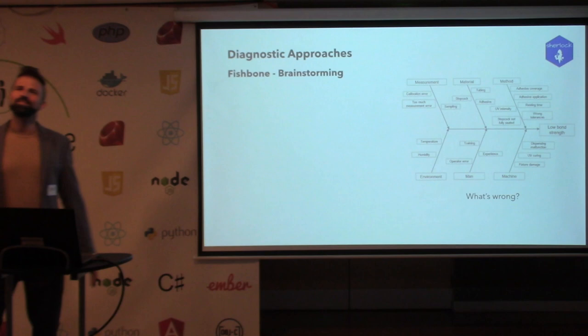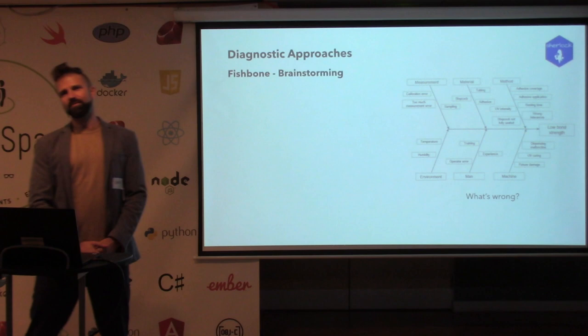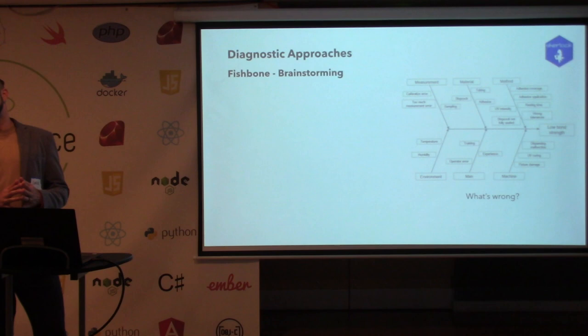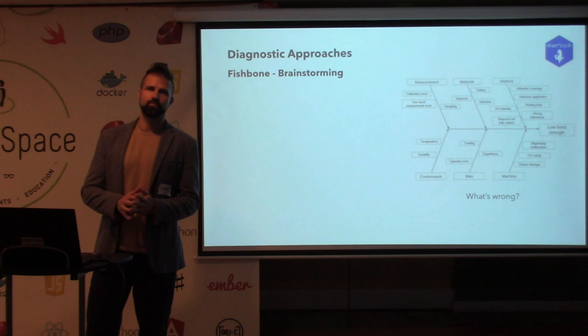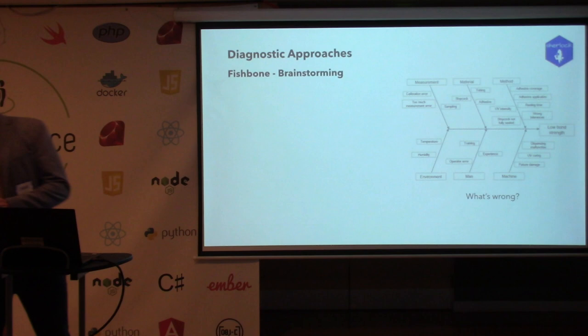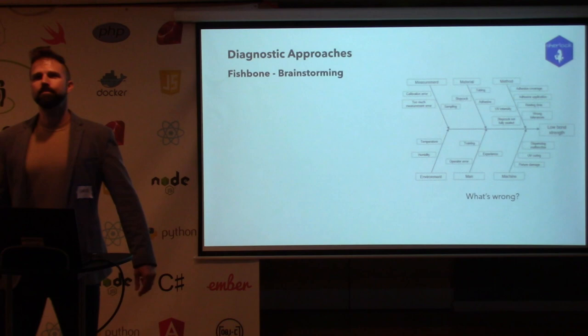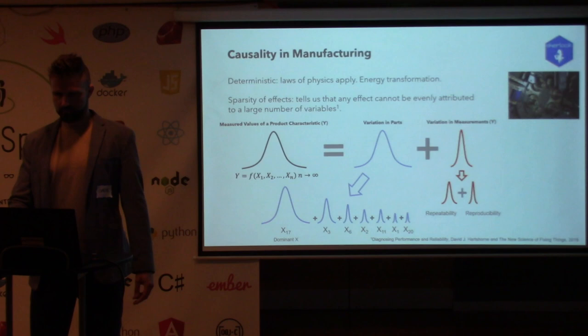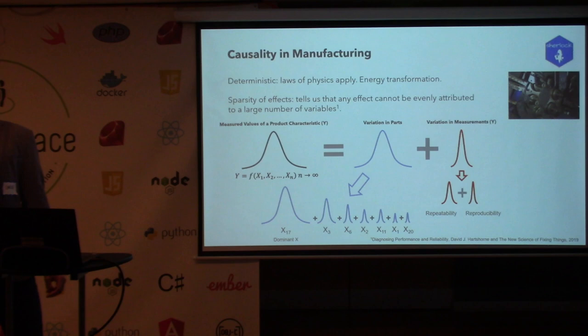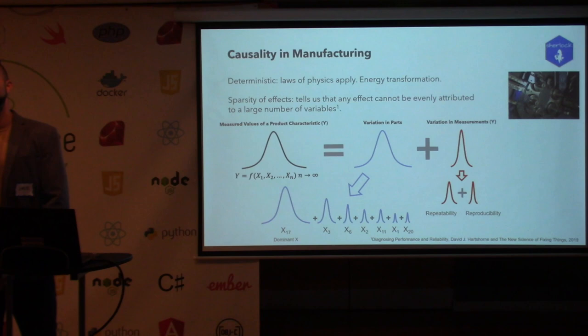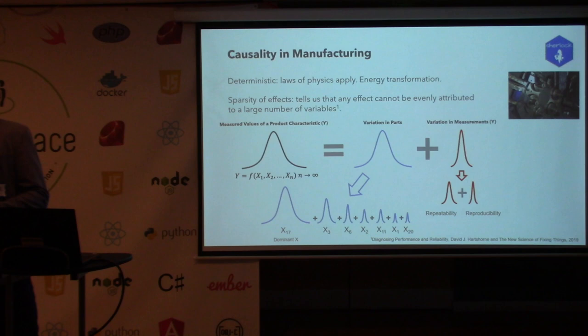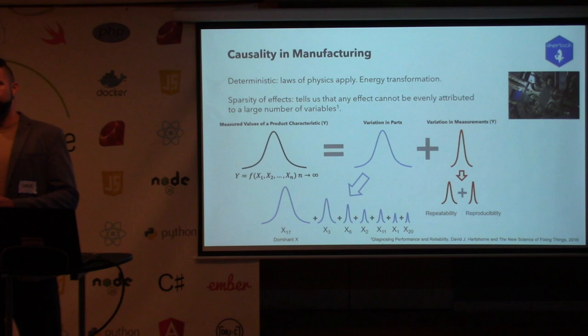An audience member asks: if you find an effect causing a problem in one car, can you assume that same root cause applies to all other cars of the same brand? The speaker confirms: exactly. You're looking at a population of cars, and the key is identifying that one root cause that drives variation across the population.